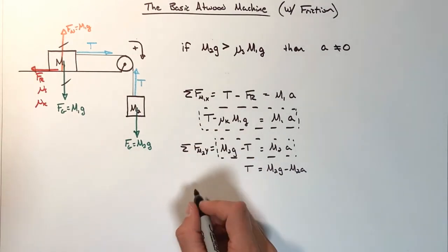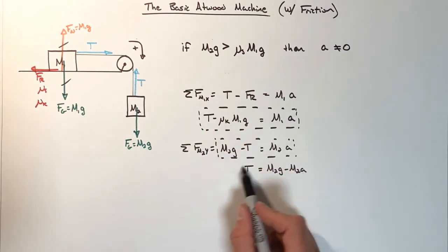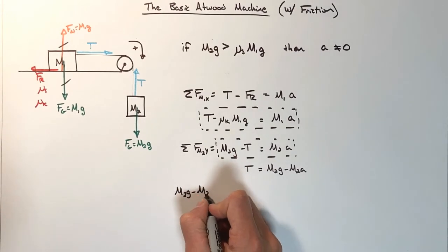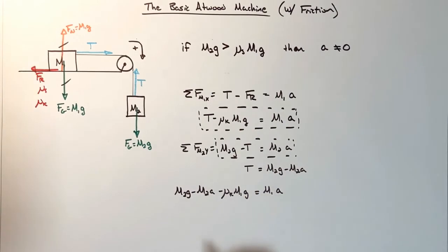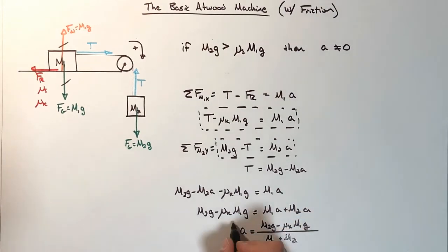And we'll substitute this in up here. So, combining this equation and subbing it in here, we get... Remember, we're trying to solve for the acceleration, so I'm going to pull this term over here. And rearranging for A, we see... This is the result to the basic Atwood machine with friction.